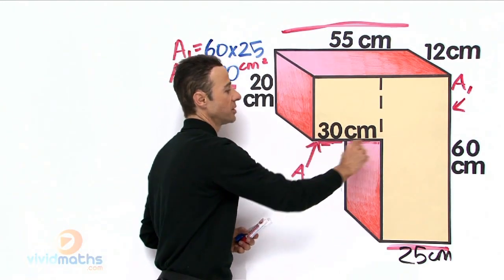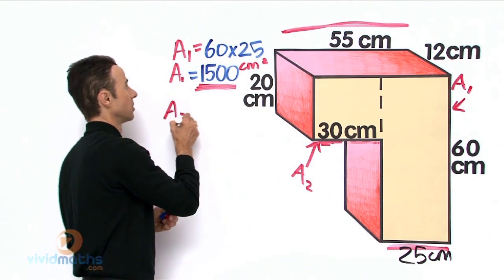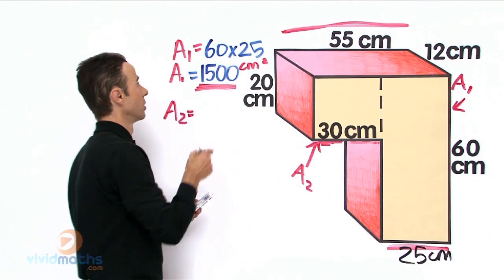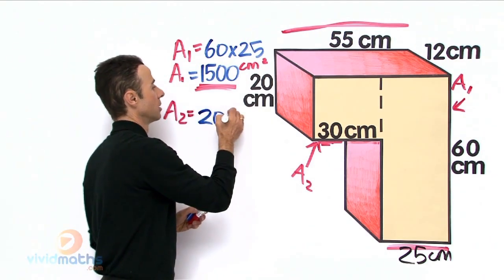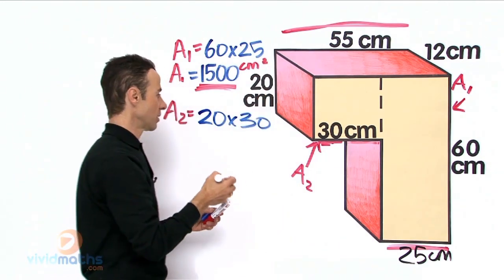So 20 times 30 gives us a grand total of, let us work that out. Area two equals 20 times 30 because that 20 is transferred there. There is that 20, right?